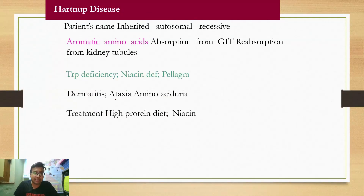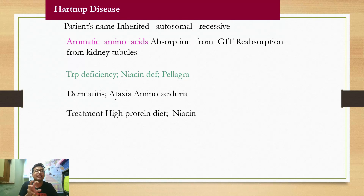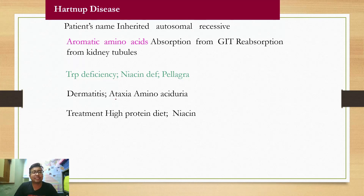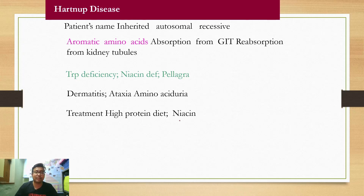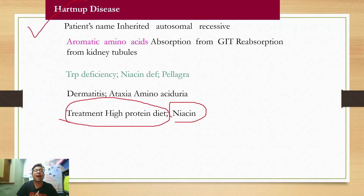You need to remember one disease: Hartnup disease. It will be dealt with in a separate video covering all amino acid disorders. For now, just know it happens when there is defective aromatic amino acid absorption from kidneys — it is an autosomal recessive disorder. What will happen? Tryptophan deficiency leads to niacin deficiency, which leads to pellagra. Clinical features are all related to pellagra: dermatitis, dementia, etc. Treatment is simple: supplementation of niacin and tryptophan in the diet.